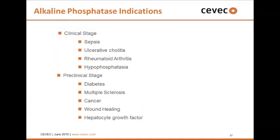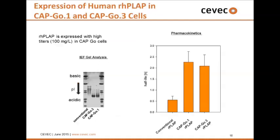The alkaline phosphatase is another example, currently in various clinical programs for sepsis, colitis, arthritis, and preclinical work in diabetes. Here the molecule derived from our CAPGO1 and CAPGO3 cells shows, in a rat study, that we can increase the plasma half-life of alkaline phosphatase by a factor of 4 to 5 when compared to conventionally produced alkaline phosphatase. Isoelectric focusing confirms significant differences in post-translational modifications between the CAPGO-derived material and the conventional molecule, which account for these improved pharmacokinetics.